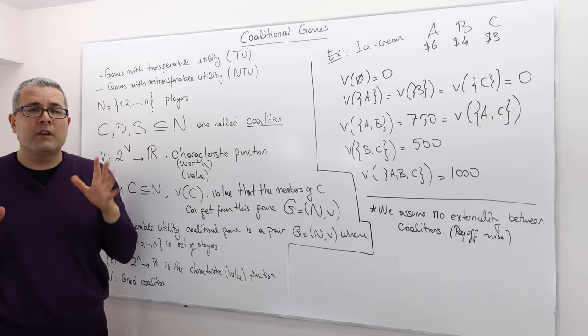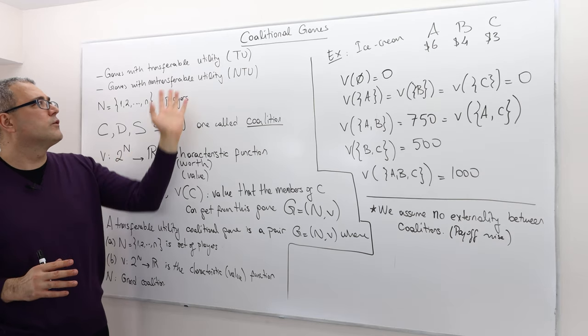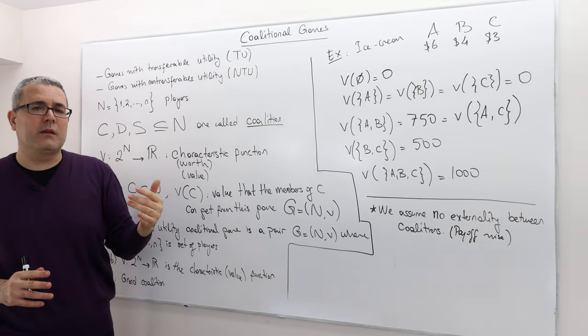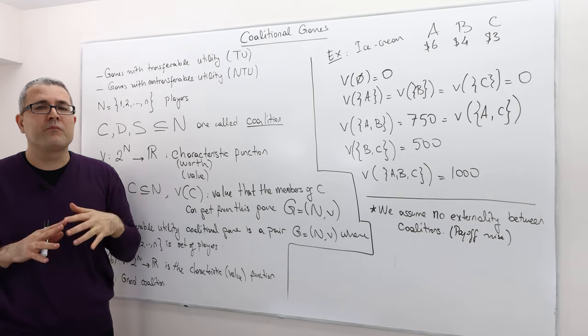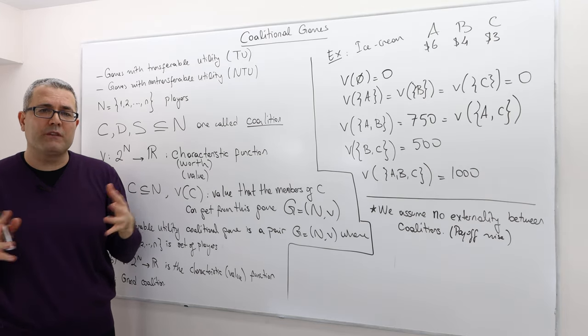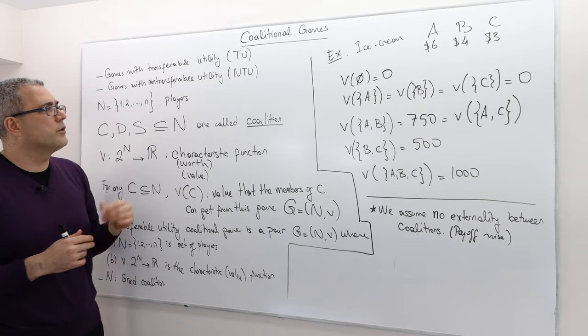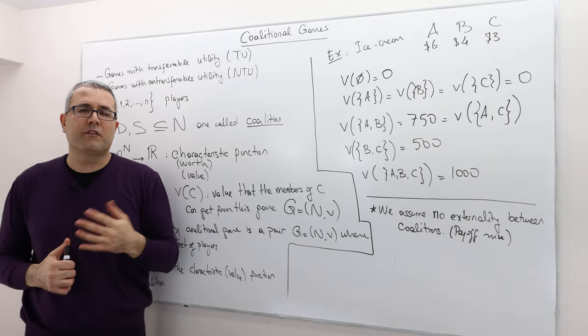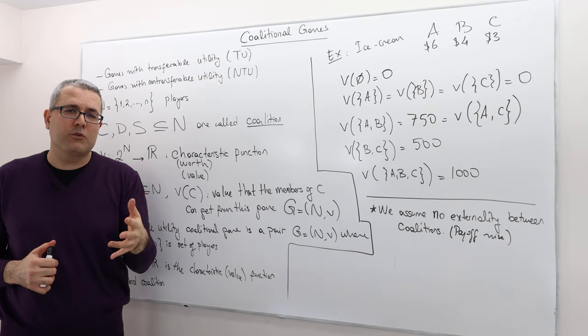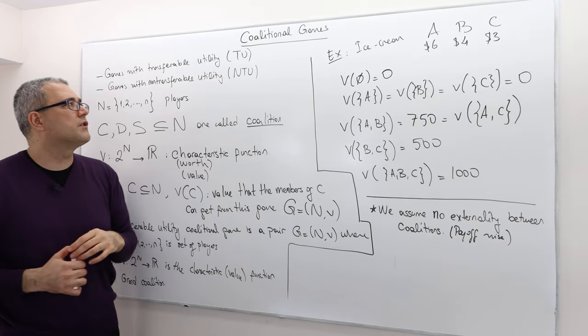So in this chapter we are going to talk about transferable utility games, but there are also coalitional games or cooperative approach with non-transferable utility. For example, matching is one of them and we're going to talk about those in the future, not in this chapter.